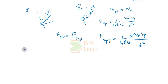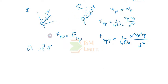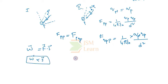Since work done equals F·ds and the force acting on the two moving charged particles is the same in both cases, the deciding factor now becomes the displacement. So the work done depends on the displacement covered by each particle.